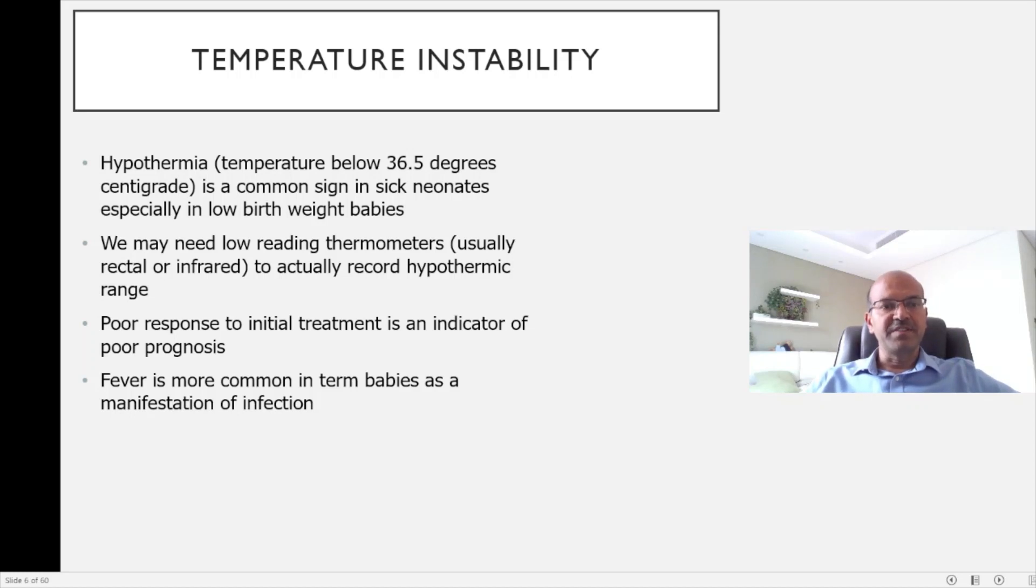A temperature below 36.5 degrees Celsius is very common, and you may need low-reading thermometers to accurately assess the degree of hypothermia, because your intervention will depend on how severe it is. Once you have initiated treatment, a poor response indicates a poor prognosis as well.